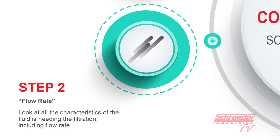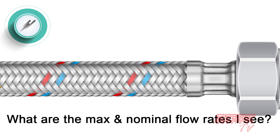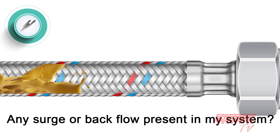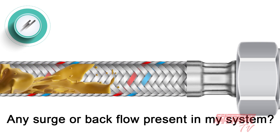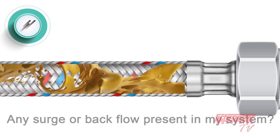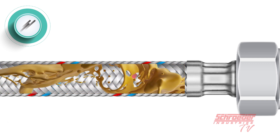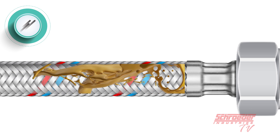Step two is to determine the flow rates within the system needing filtration. Questions you need to ask yourself are: what are the maximum and nominal flow rates that the system sees, and is there a type of surge or backflow present in my system? These questions will lead you to finding the correct element sizing and material needs.